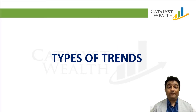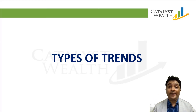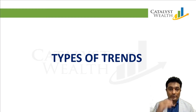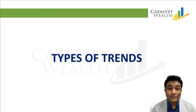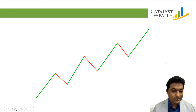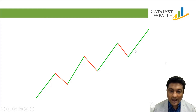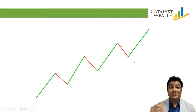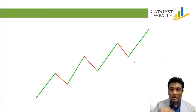Based on our knowledge of close line charts, let's see what are the trends in a stock market. If I show you this close line chart, what do you see? What I see is higher tops and higher bottoms. So this is called an uptrend, which means the stock is going up.